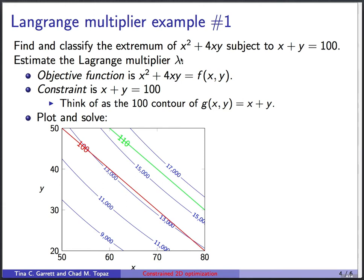I always begin by trying to clearly articulate what's the objective function. What's the thing we want to extremize? That's, we'll call it f(x, y). It's x² + 4xy. The constraint is that x + y must equal 100.